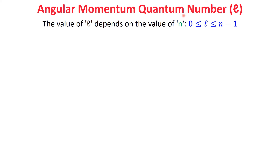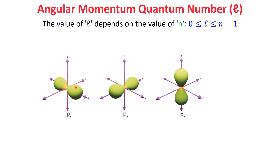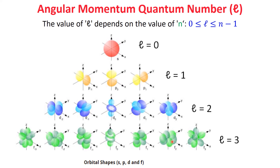Next, we have the angular momentum quantum number, l. This number defines the shape of the orbital where the electron is most likely to be found. The value of l depends on n and can range from zero to n minus one. Each value of l corresponds to a different orbital shape: l=0 is an s-orbital (spherical), l=1 is a p-orbital (dumbbell-shaped), l=2 is a d-orbital (cloverleaf shape), and l=3 is an f-orbital with a complex structure.